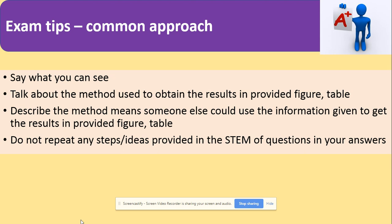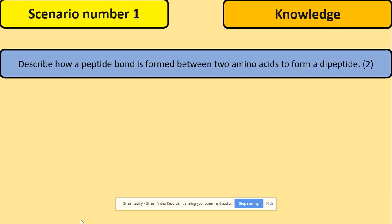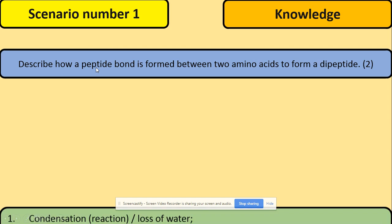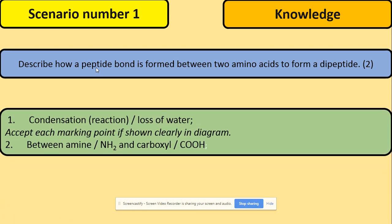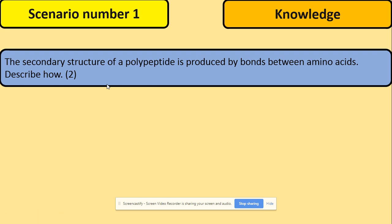We will have a look at a few scenarios of describe questions. Scenario number one is using just your knowledge. The question is: describe how a polypeptide bond is formed between two amino acids to form a dipeptide. There are two marks for this question. Imagine in your head you're joining two amino acids, focusing on the peptide bond. We need to say how — by condensation reaction — and where — between amine and carboxyl group. So the main aspect is the peptide bond.